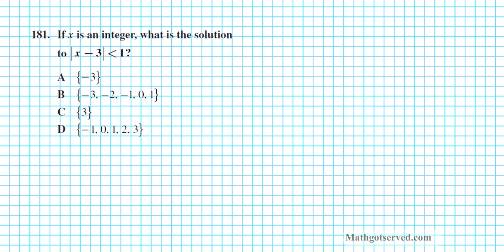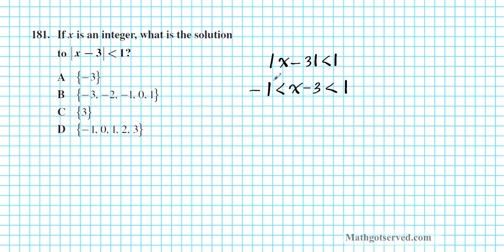Let's take a look at problem 181. It says: if X is an integer, what is the solution to the absolute value of X minus 3 is less than 1? We're solving an absolute value inequality. Since it's less than, we can write it as a sandwiched inequality: negative 1 is less than X minus 3, and X minus 3 is less than 1.